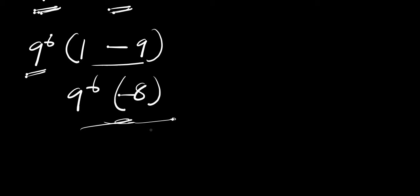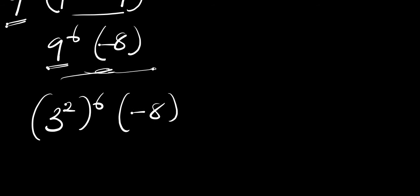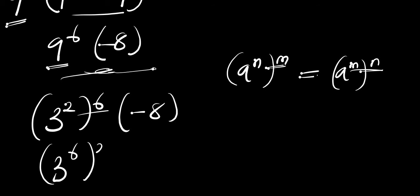Some people can leave the answer here, but we are going to get it to the simplest form. Now 9 is a perfect square — we can have it as 3 power 2. So 9 power 6 becomes 3 power 2, raised to power 6, times negative 8. From the identity (a^n)^m = a^(n times m), we apply this and get 3 power 12 times negative 8, which we can write as 3 power 6 raised to power 2 times 8 times negative 1.